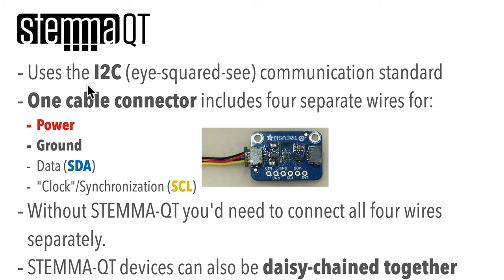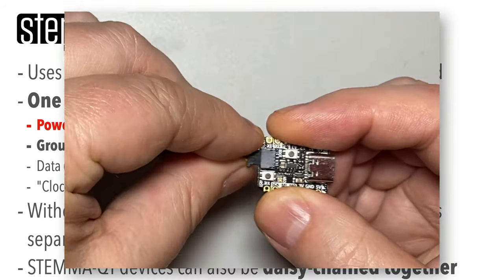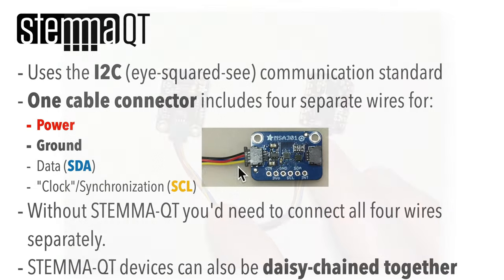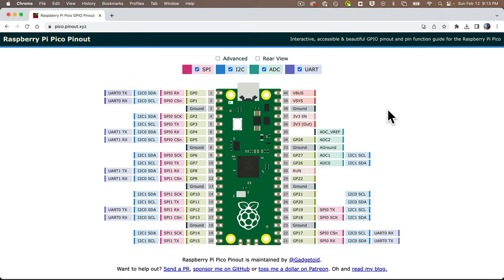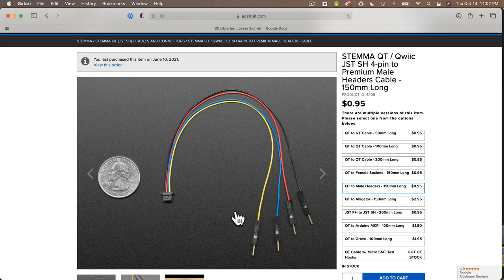Another thing we're going to be working with is wiring up devices that communicate with our board using a communication mechanism called I2C. In an earlier video we mentioned that I2C is the communication scheme used in what Adafruit calls the STEMAQT port — SparkFun calls this the Qwiic connection. This is a really handy connection because it takes the four wires used in I2C and allows you to plug them into a single port. I2C has four wires: power (usually red), ground (usually black), SDA which is data (usually blue), and SCL or clock (usually yellow). The Raspberry Pi Pico boards don't have a STEMAQT port, but we can wire one up using a cable that has four wires with pins on one end and STEMAQT connections on the other.